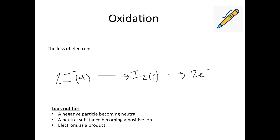So then we're on to oxidation. You did this a little bit in National 5 where you learned about OIL RIG — oxidation is loss of electrons. So you're looking for electrons to be on the product side of the reaction because they're getting lost. Other things to look for, if the electrons aren't shown, are a negative substance becoming neutral, or a neutral substance becoming positive — any type of process that involves loss of electrons.